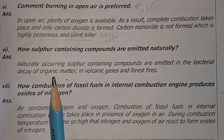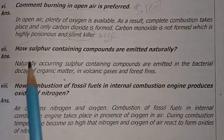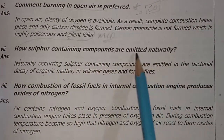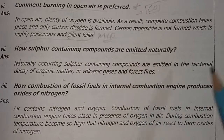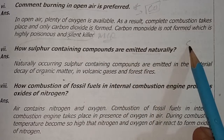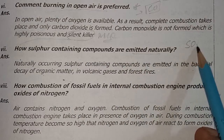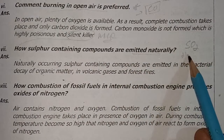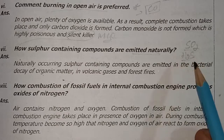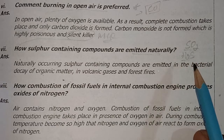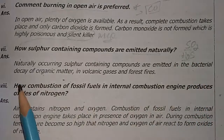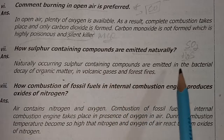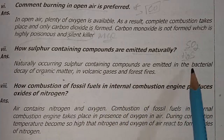Question seven: How are sulfur-containing compounds emitted naturally? Examples of naturally occurring sulfur-containing compounds include sulfur dioxide and hydrogen sulfide. These are emitted through the bacterial decay of organic matter.